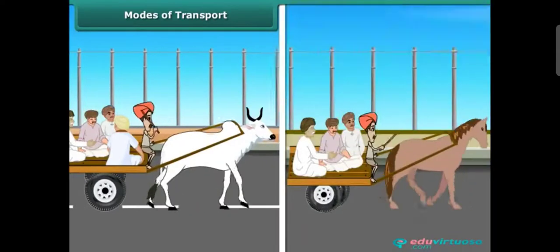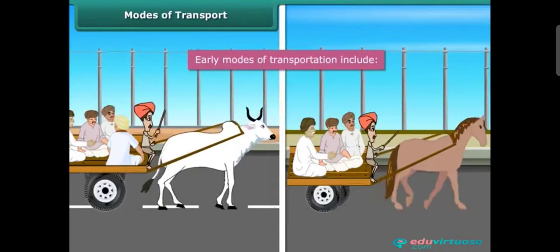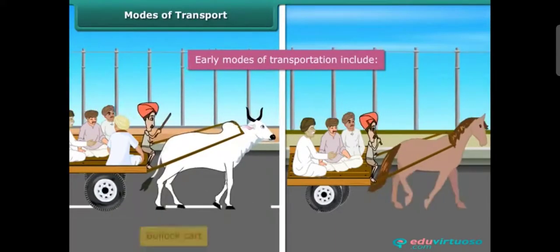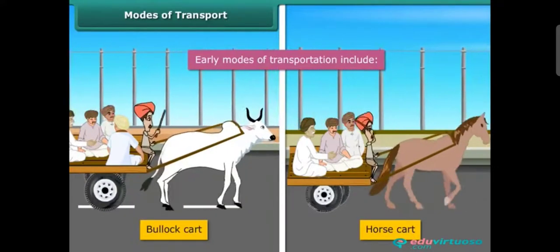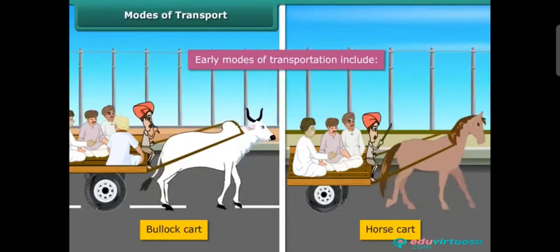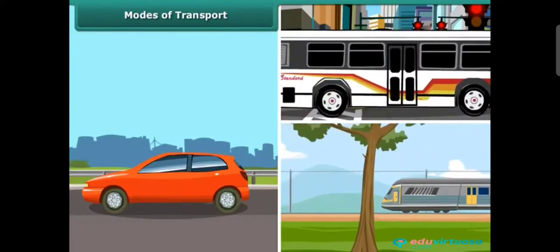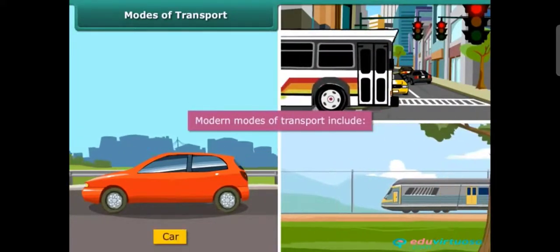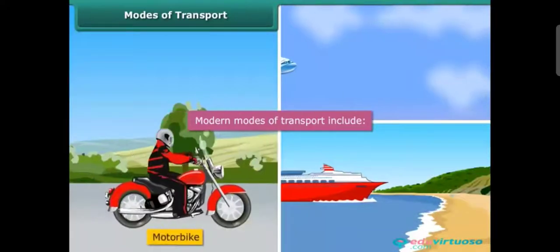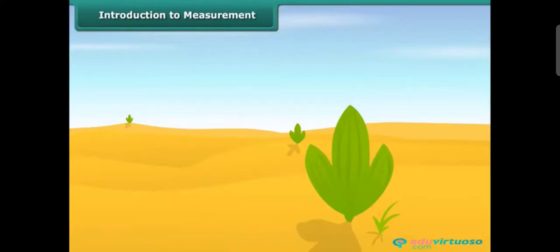Modes of transport — have you wondered how people traveled in the earlier days? In the early days, people always used animals to travel from one place to another, for example, bullock carts, horse carts, etc. Can you imagine using a bullock cart to come to school every day? Nowadays we have progressed and learned to use fuel and natural resources to create better modes of transport. Hence we now have cars, buses, road railways, motorbikes, aeroplanes, ships, etc.